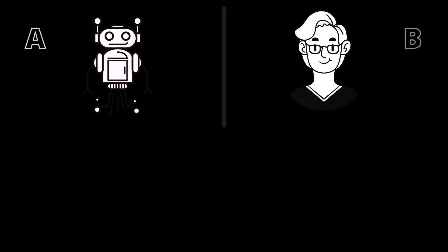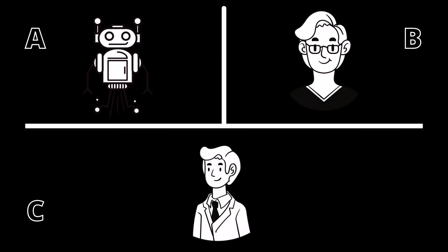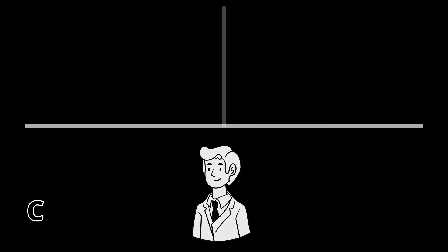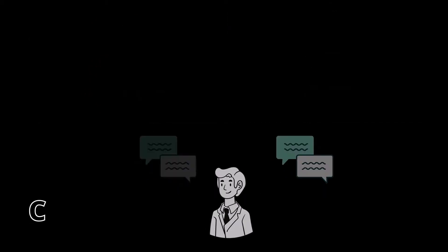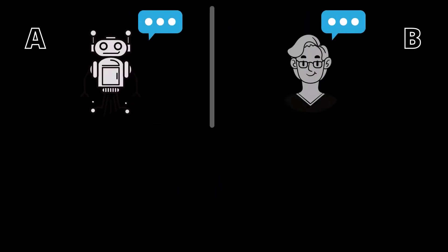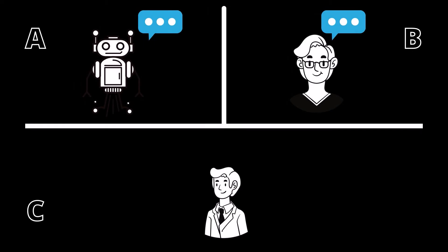For performing the Turing test, researchers set up three terminals — one terminal has a computer and the other two terminals have humans. One of the humans is the inspector, who blindly questions both the computer and the human through text conversations in a particular subject area. Based on the answers, the inspector has to identify which answer came from the human and which came from the computer.